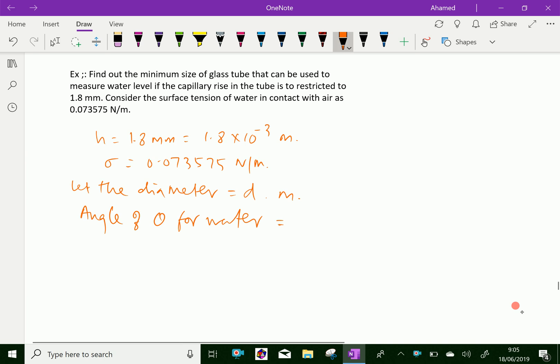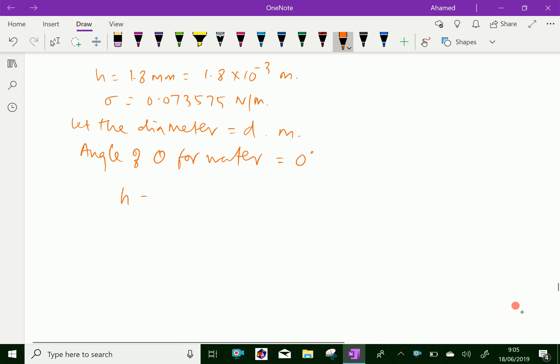From that we can get d equals 4 sigma over rho g h, because we have to find the diameter of the tube.